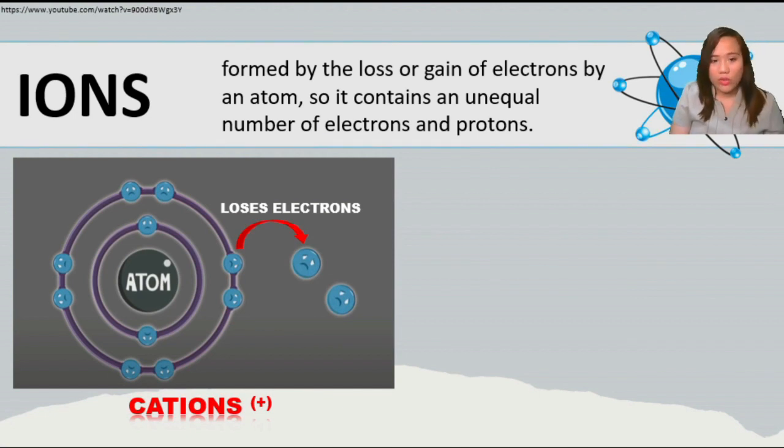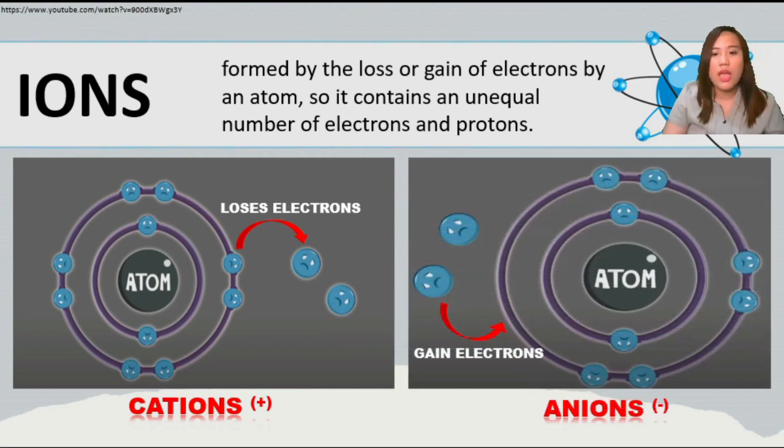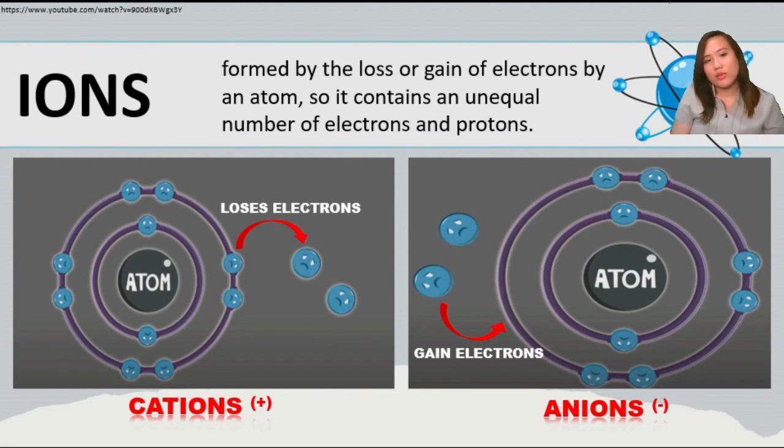The next type is the anion. Whenever the atom gains electrons, its charge becomes negative. When it happens, it is called an anion.